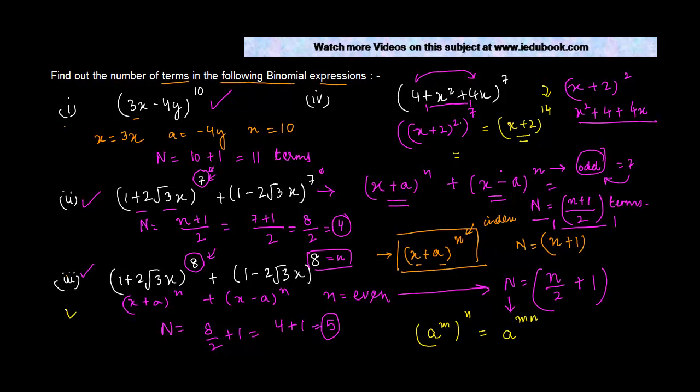So we've got n, which is 14. And this is not in any of these forms. It's actually simply in this particular form. So we will have capital N is equal to n plus 1, 14 plus 1, 15. So the number of terms is 15.